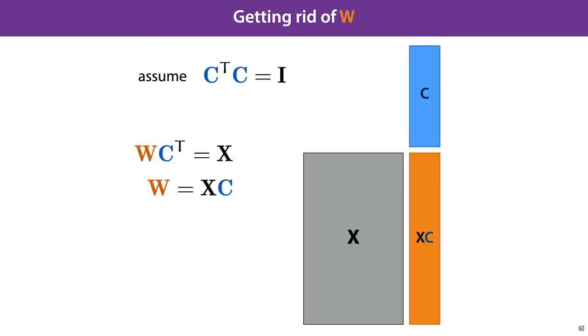In principal component analysis, we assumed that the principal components were unit vectors, and that they are orthogonal to each other. If we do that here, it allows us to get rid of the variable W. We can write the assumption like this. If C transposed times C is the identity matrix, then we know from our linear algebra that the columns of C are unit vectors that are mutually orthogonal.